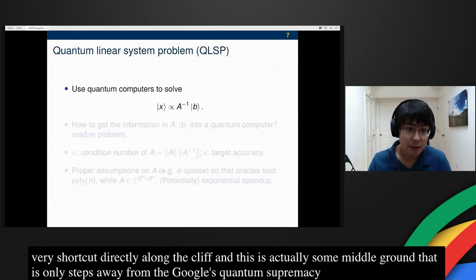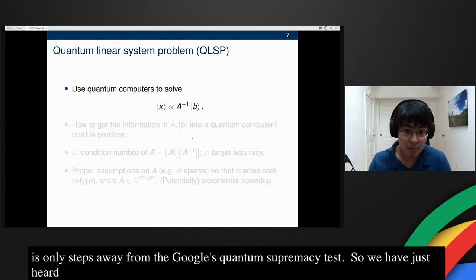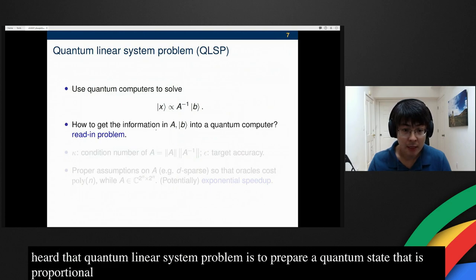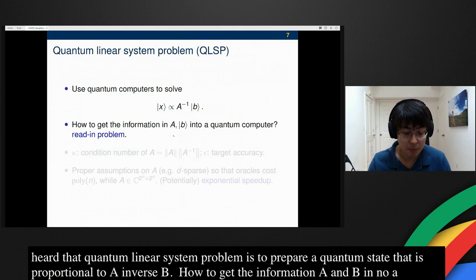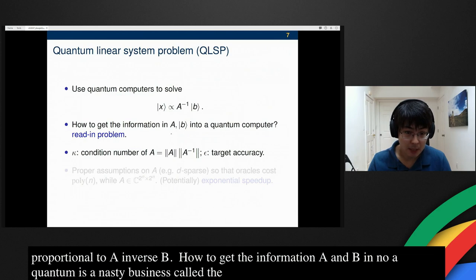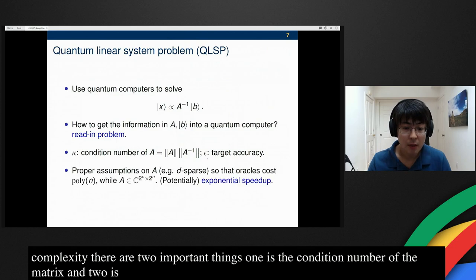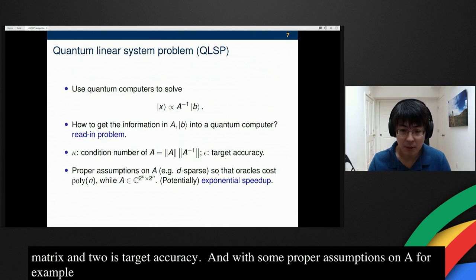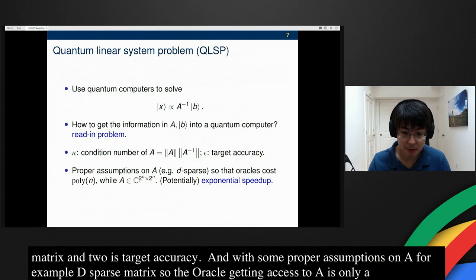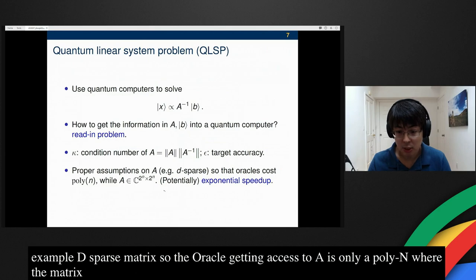The quantum linear system problem is to prepare a quantum state that is proportional to A inverse B. How to get the information of A and B into a quantum computer is a very nasty business called the reading problem. In order to quantify the complexity for solving linear systems, there are two important things. One is the condition number of the matrix, and two is the target accuracy. With some proper assumptions on A, for example, the D-sparse matrix, so that the oracle getting access to A scales only as poly-N, where the matrix itself is exponentially larger, then we can potentially achieve exponential speedup.